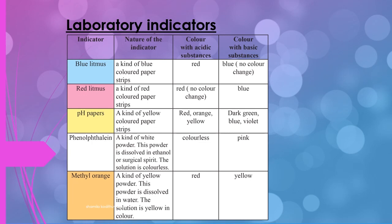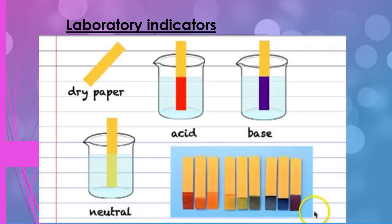The next indicator is pH paper. pH paper is a kind of yellow colored paper strip. In acidic solution, it turns to red, orange, or yellow color. In basic solution, pH paper turns to dark green, blue, or violet.